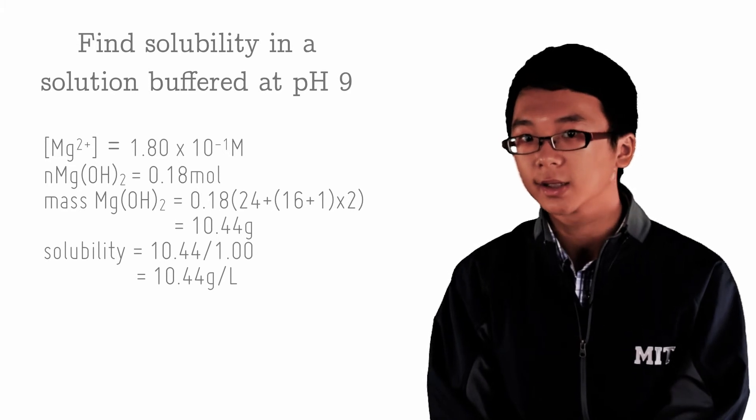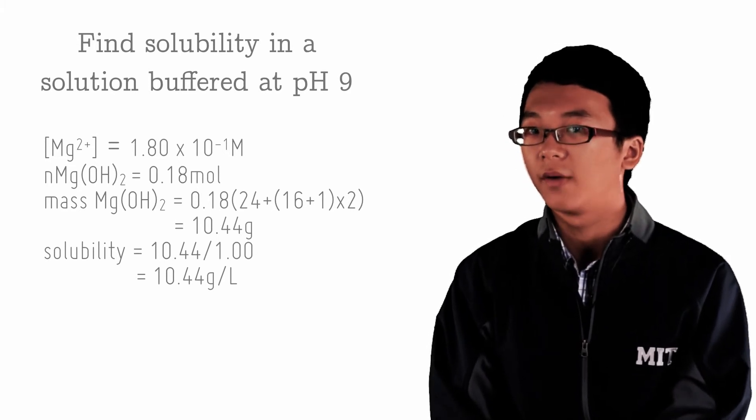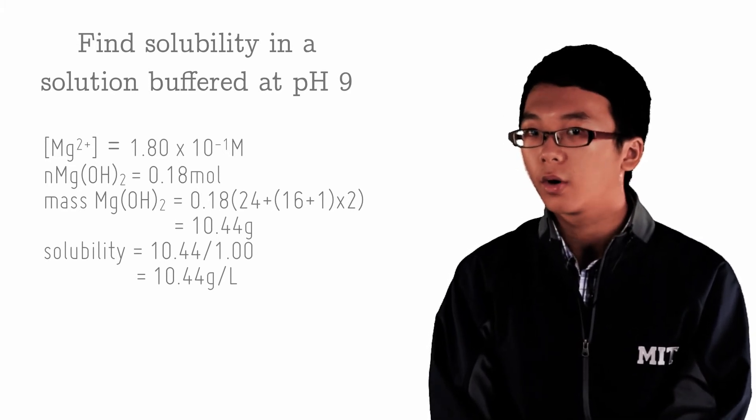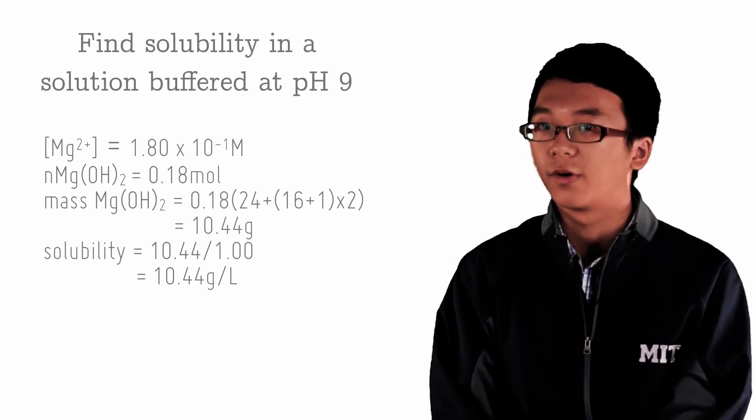Solubility of magnesium hydroxide is 1.8 times 10 to the power of negative 1 molar, or 10.44 grams per liter.